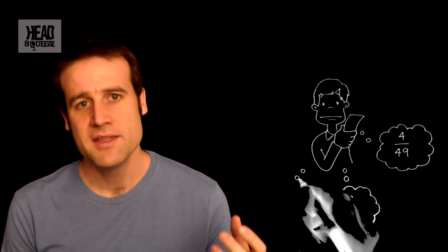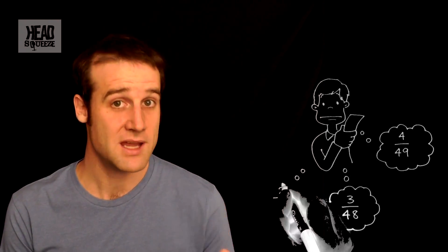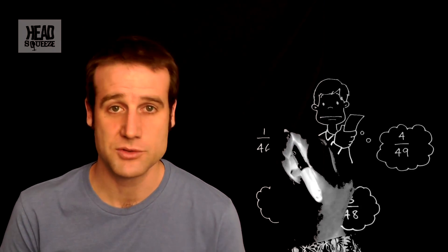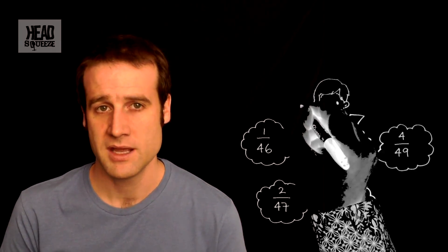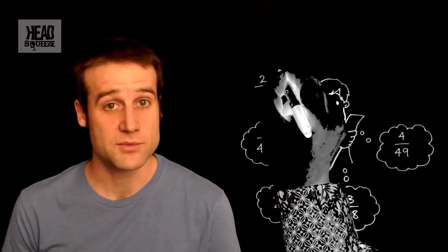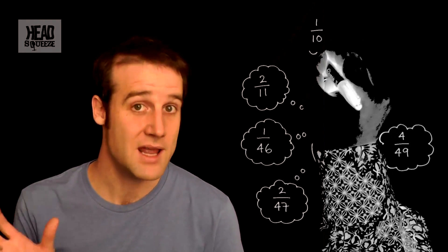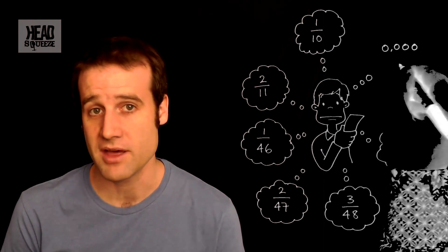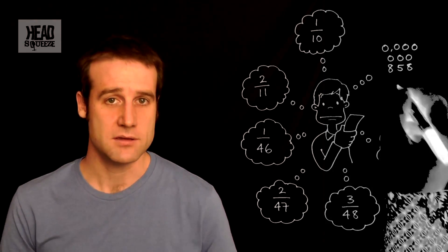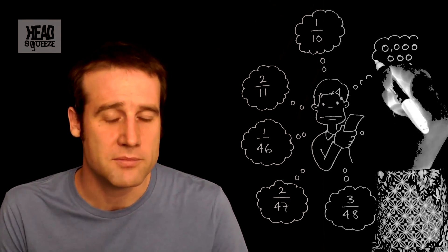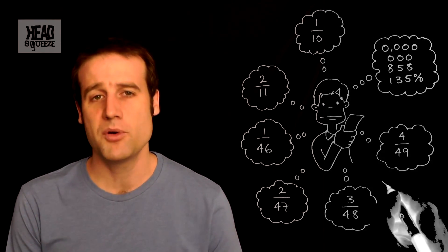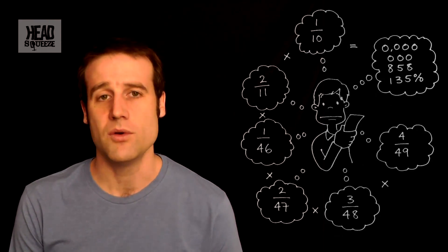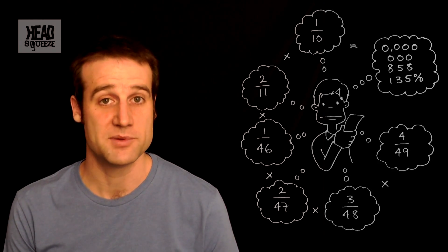The third ball, there are then 3 numbers you need out of the 48 in the bucket. The next draw you need 2 from 47, and the last one will be 1 from 46. This is all the way down to about a 2.2% chance. In terms of the lucky stars, the first one out, there are 2 numbers you need out of the possible 11, and then 1 from 10. If you multiply all of these together, your grand total probability of winning the Euromillions jackpot is around about 0.000000858135%.